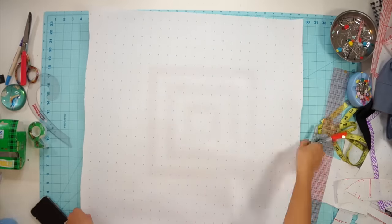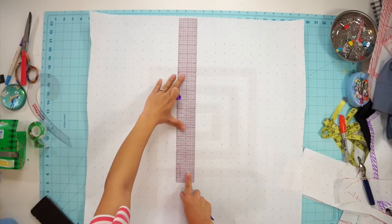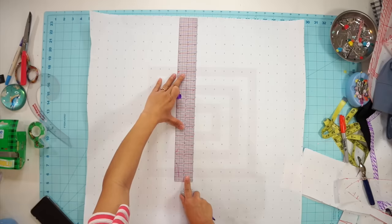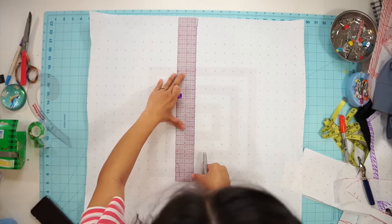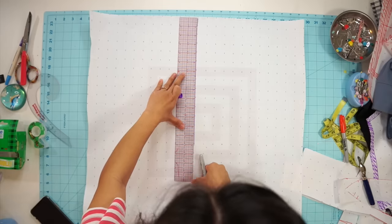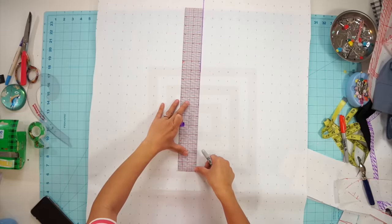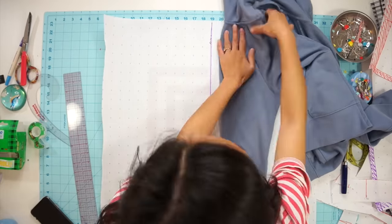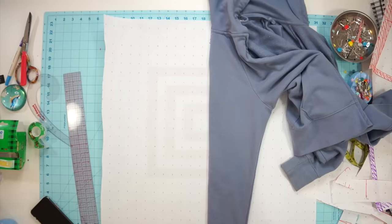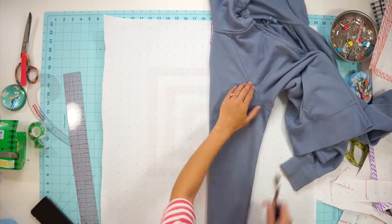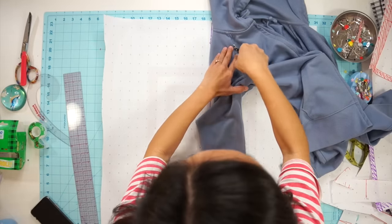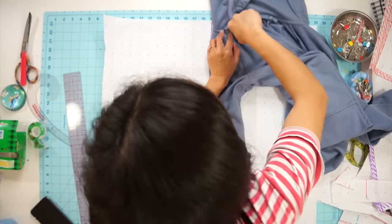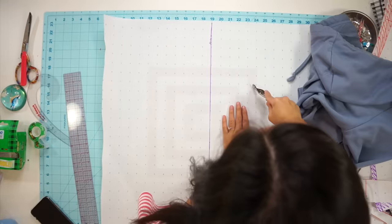And next here's how you would trace the sleeves of this hoodie. It's a different shape from the other one and we will have to trace both sides separately. Draw your center fold line, line up the front half of the sleeve along the line and then trace it out. Follow the shape of the armhole and then at the top the sleeve connects to the neckline so you'll have to trace it along the neckline.